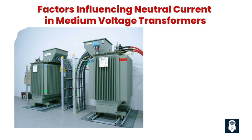Factors influencing neutral current in medium voltage transformers: 1. Unbalanced loads and neutral current. When the loads connected to a transformer are not evenly distributed among the three phases, it results in unbalanced currents. This imbalance can cause an increase in neutral current, potentially leading to overheating and voltage fluctuations.